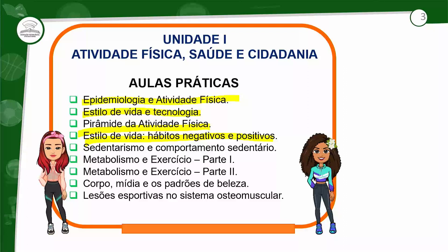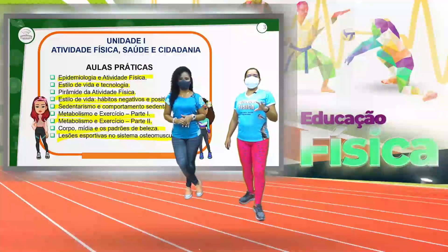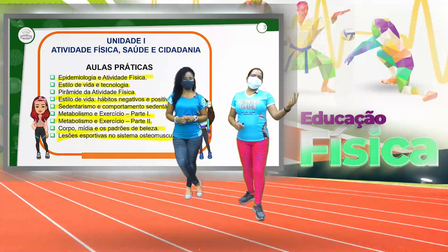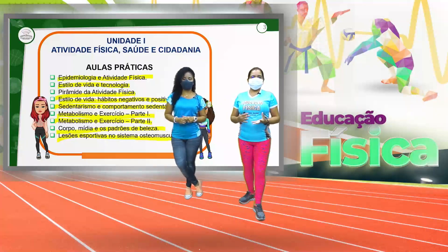Nesse módulo são 9 aulas. Nós temos: sedentarismo e comportamento sedentário; metabolismo e exercício, com parte 1 e parte 2; corpo, mídia e padrões de beleza; e as lesões no sistema osteomuscular. São 9 aulas no total e nós vamos ter orientação para cada aula. Vai ter aulas que vão ter 2 propostas, vai ter aulas que vão ter 3, dependendo da aula. Agora nós vamos começar a orientação da primeira aula.